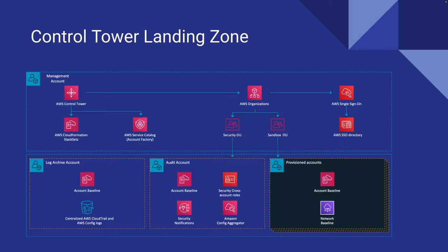This is what the Control Tower landing zone looks like. You have your management account, and you have two options: you can deploy this as a brand new greenfield landing zone — a new management account, set up an organization, and deploy Control Tower — or you can deploy it in your existing master account using your existing AWS organization. If you are deploying into an existing organization, there are some checklists you need to run through before you enable Control Tower. Any existing accounts already deployed will not automatically come under Control Tower — you need to enroll those separately after deploying Control Tower, same with existing organizational units.